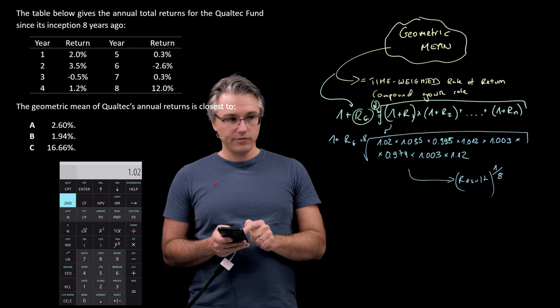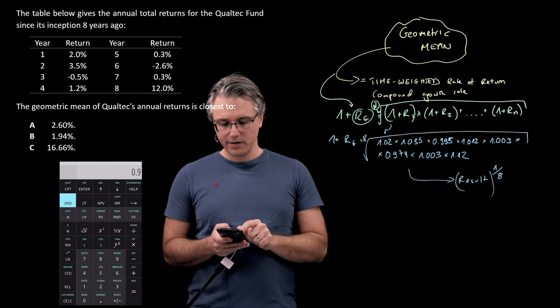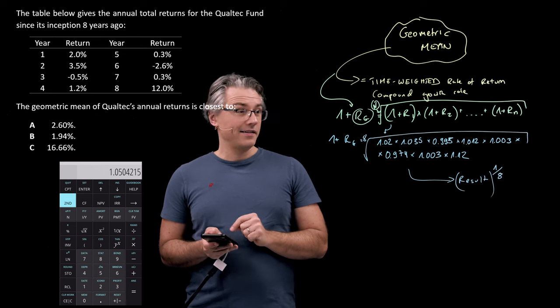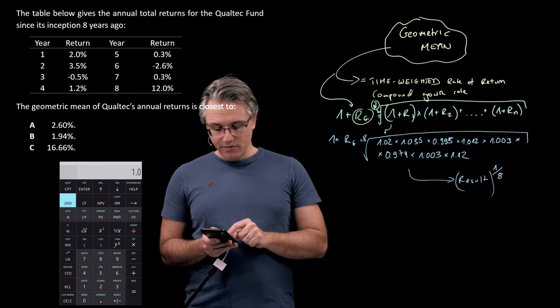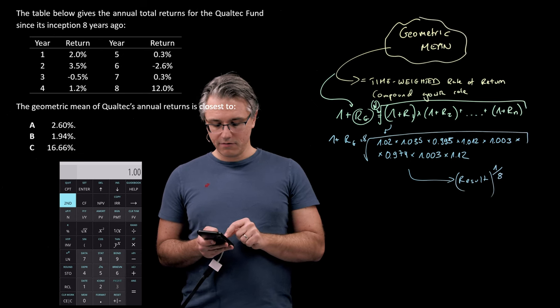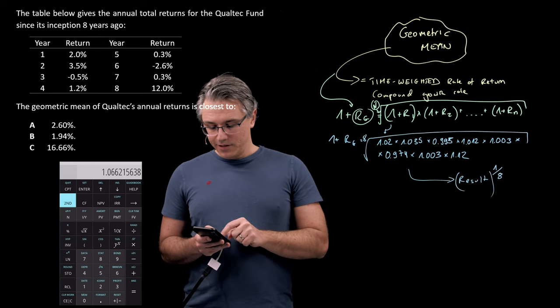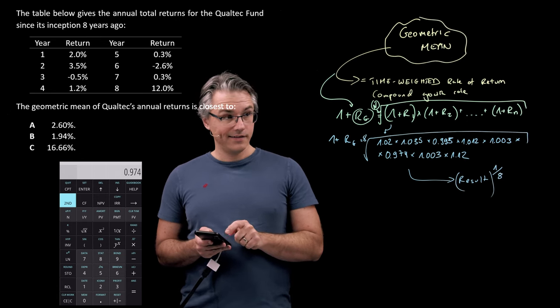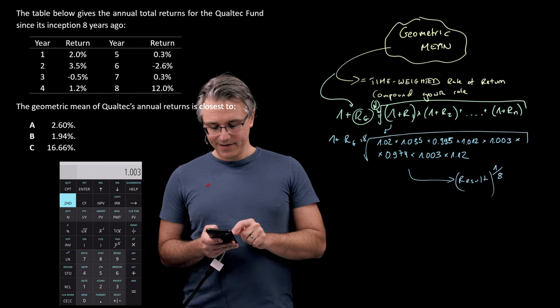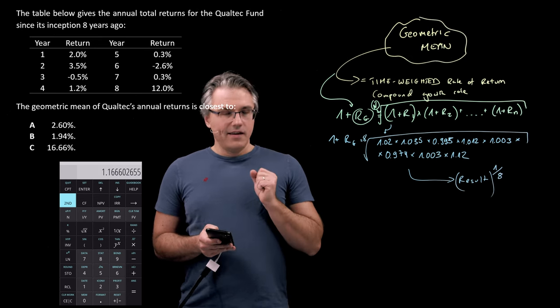1.02 times 1.035 times 0.995. Just be careful with what you enter. Then 1.012 times 1.003 times 0.974 and 1.003 times 1.12.